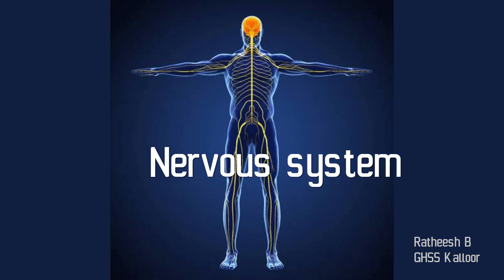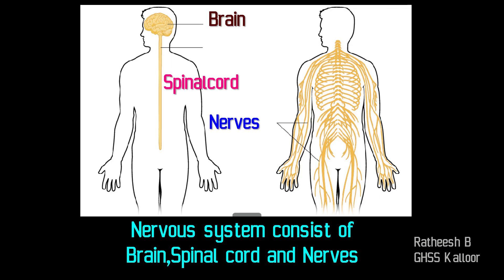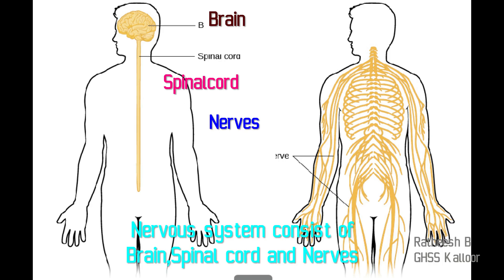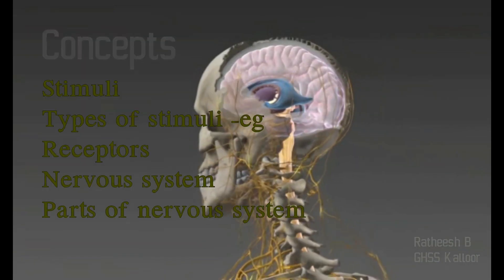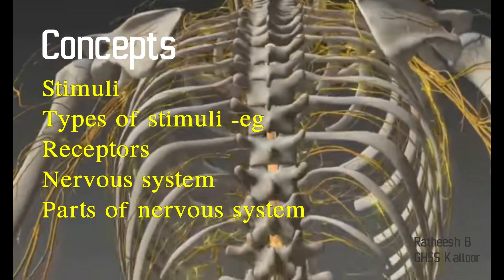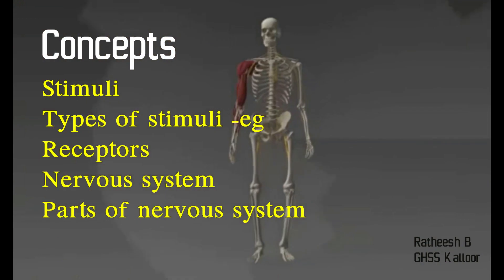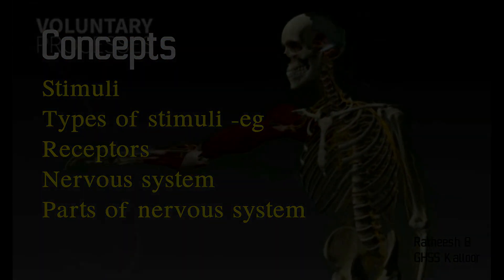Now we can analyze which are the major parts of the nervous system. You can see the major parts of the nervous system in the picture. The nervous system consists of three main parts: one is the brain, two is the spinal cord, and three is the nerves. The major concepts in this topic are: what is stimuli, how many types of stimuli are there, what is response, what is the nervous system, and which are the parts of the nervous system. In the next part, we can discuss the component of the nervous system — that is, the neuron.